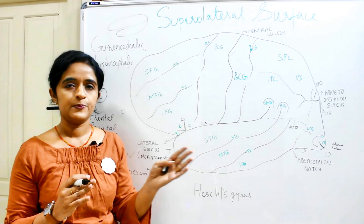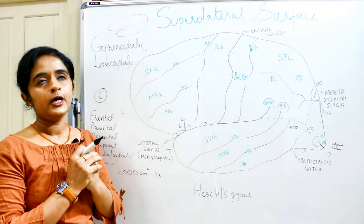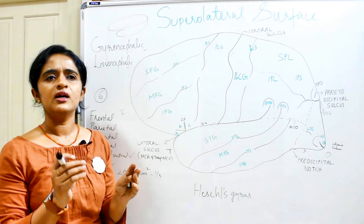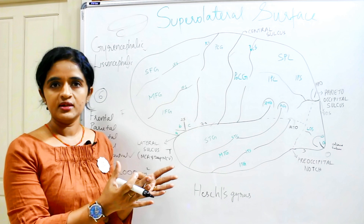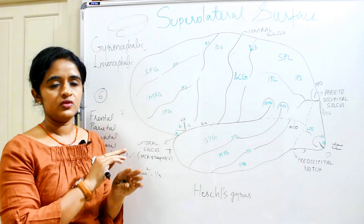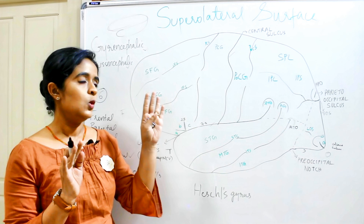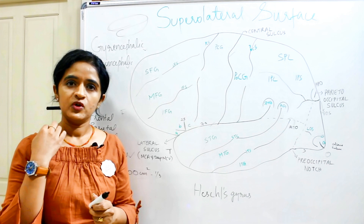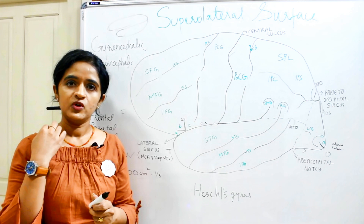Regarding the surface area of the cerebral hemisphere, due to the convolutions, the total area comes to about 2000 cm². However, only one third of it is actually visible when you look at the cerebral hemisphere. The remaining area is hidden within the sulci. If you spread the cerebrum as a sheet, the total surface area would be about 2000 cm², with only one third visible as projecting gyri.